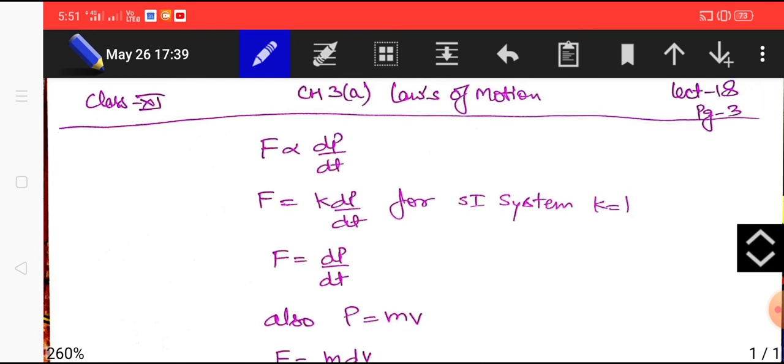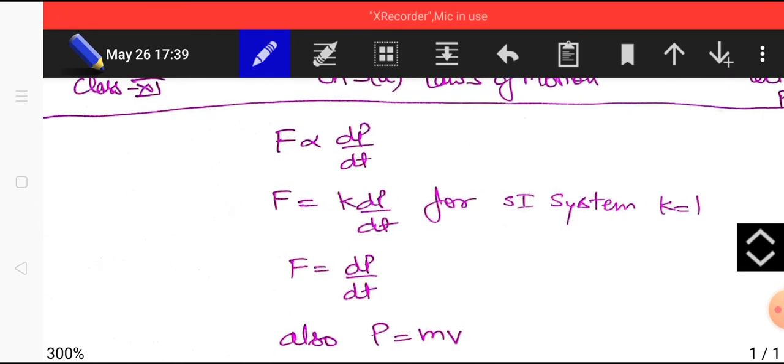Let us have a little detail of this second law of motion. So force is directly proportional to rate of change of momentum by Newton's second law of motion. But in SI system the constant of proportionality is equal to 1 hence we can also say that F equals dp by dt.